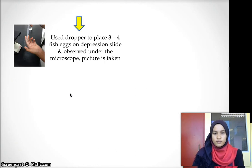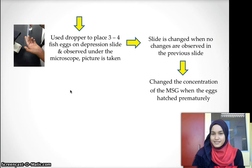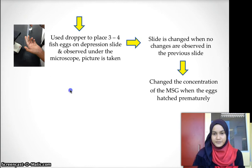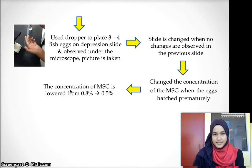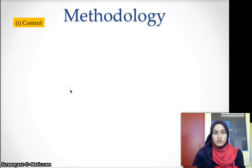A dropper is used to place 3 to 4 fish eggs on a microscope slide and observe under the microscope, and a picture is taken. The slide is changed when no changes are observed on the previous slide. The concentration of MSG is lowered from 0.8% to 0.5% when the eggs hatch prematurely. The development of the fish egg is observed and recorded from stage to stage until hatched.